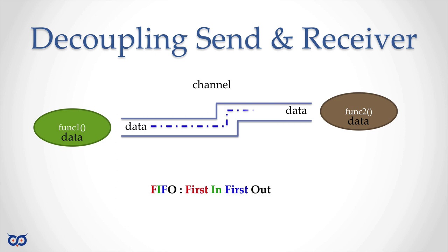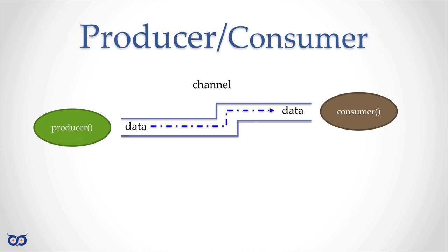If our channel is big enough we can send multiple pieces of data, and function two will receive the first piece sent — this is FIFO, first in first out. If we rename function one to 'producer' and function two to 'consumer', you can see how this idea extends: you can decouple two pieces of code, and any code that produces data that another piece needs to consume can use a channel, especially if they're running concurrently.